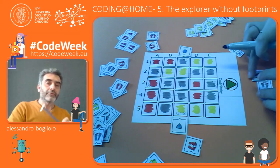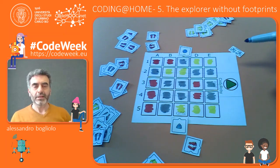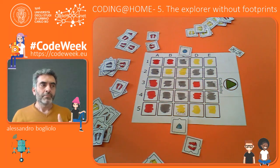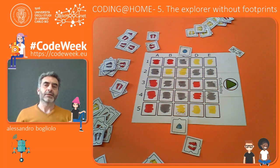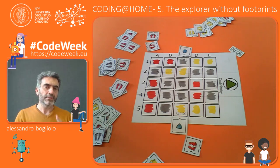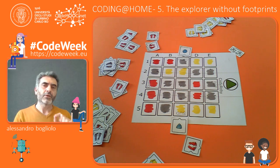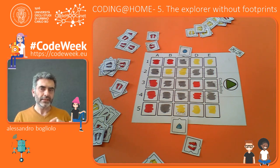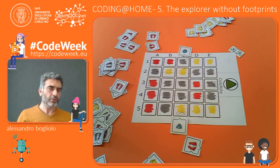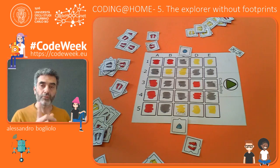Now we have no more footprints on our checkerboard, but just colors. We remember that colors encoded instructions, and we know that yellow means turn left, gray means go straight, and red means turn right. So just remembering the color encoding, we can try to follow the path.